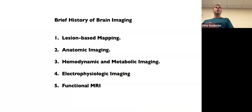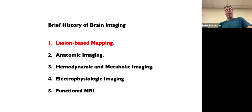This lecture is going to be a very, very, very brief and abbreviated version of the history of brain mapping, brain imaging. And I just kind of pretty much want to go over five areas. One is the really old days where things were just based on lesion-based mapping, then early developments in anatomic imaging, then hemodynamic metabolic imaging, electrophysiologic imaging, and then finally functional MRI.